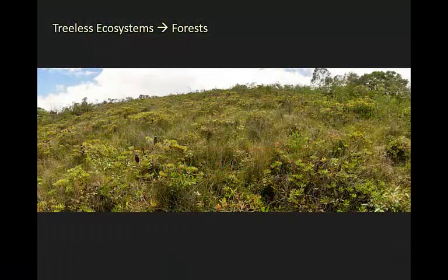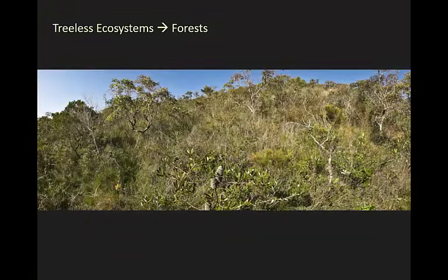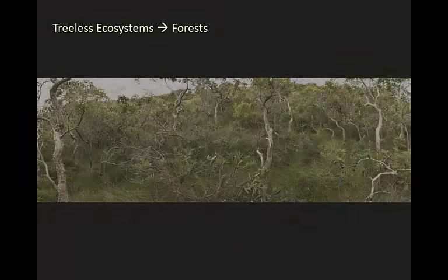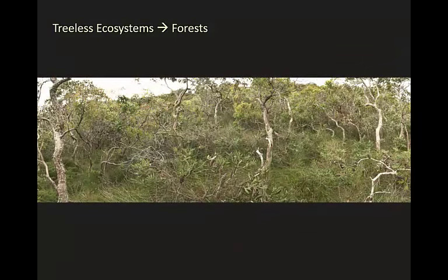Now let's look at the process of forest encroachment into treeless ecosystems. This is the typical heathland structure, with a ground stratum of grasses, sedges and heathy shrubs. In between fires, young trees may recruit into the heathland. Historically at about this time, a fire would pass through the community, removing all the young trees and restoring the original heathland structure. However, in the continued absence of fire, trees continue to develop, and if a fire passed through at this point many of the trees would survive. This represents the passing of a critical threshold, making restoration of former structure with fire alone impossible.